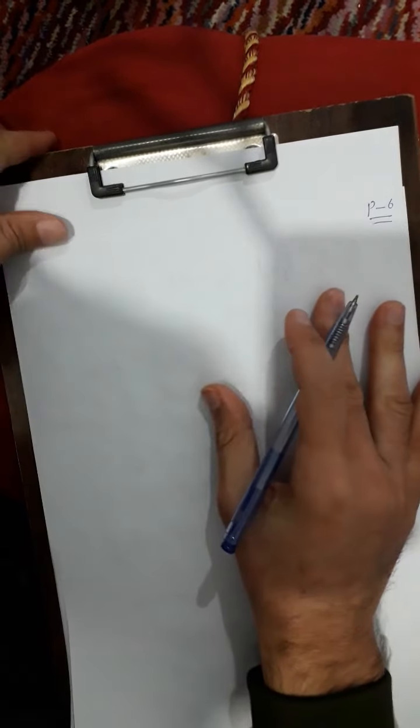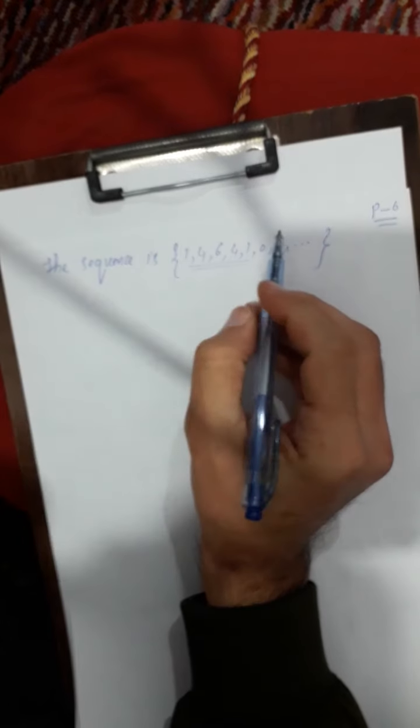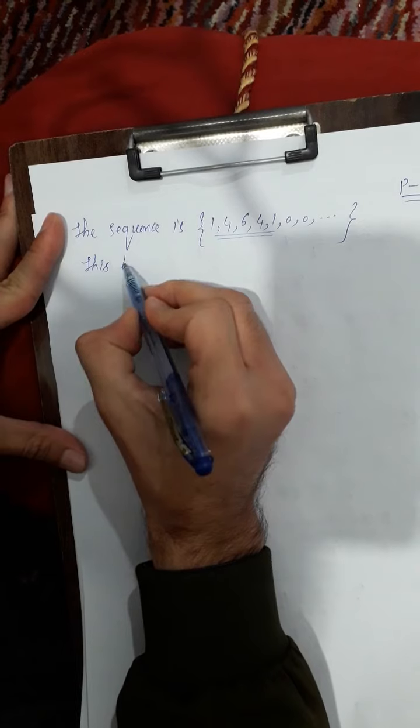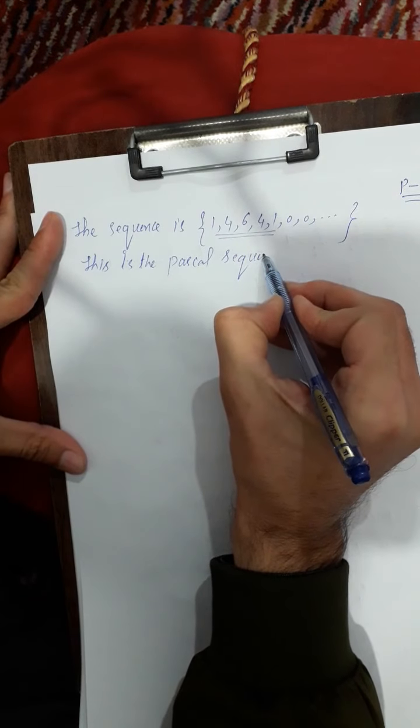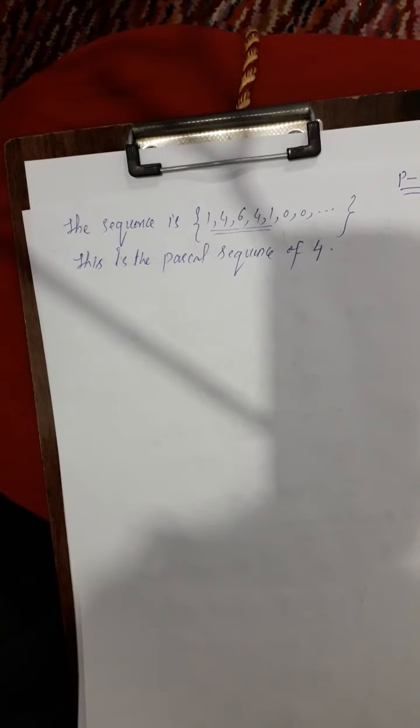So the sequence is: 1, 4, 6, 4, 1, and all remaining terms are zero. There are five non-zero terms. This sequence is called the Pascal sequence of 4 — yeh Pascal sequence of four hai. Every number has its own Pascal sequence, and we will now write how we find Pascal sequences for any number.